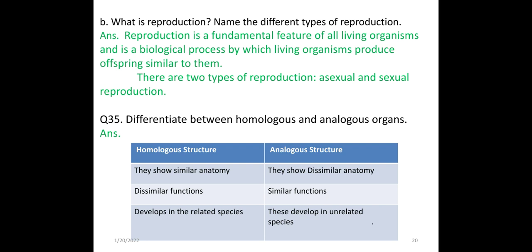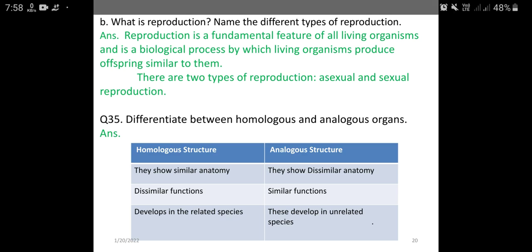Differentiate between homologous and analogous organs. In homologous organs: they show similar anatomy but have dissimilar functions, and they develop in related species. In analogous structures: they show dissimilar anatomy but have similar functions, and they develop in unrelated species.